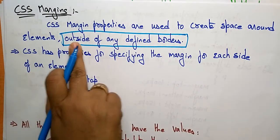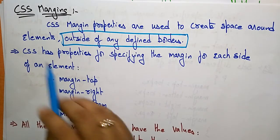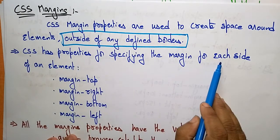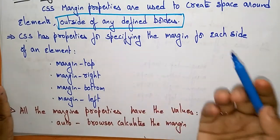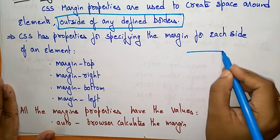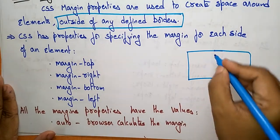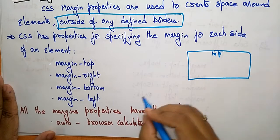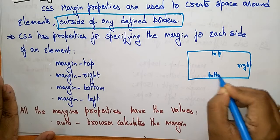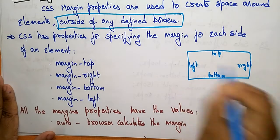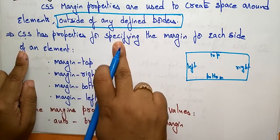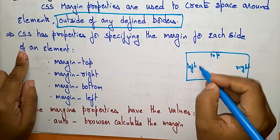CSS has properties for specifying the margin for each side of an element. Whatever side it is - the top side, right, bottom, left. Let's take this as a page. In the page, this is the top side, right, bottom, and left. CSS has a property for specifying the margins for each side of an element.